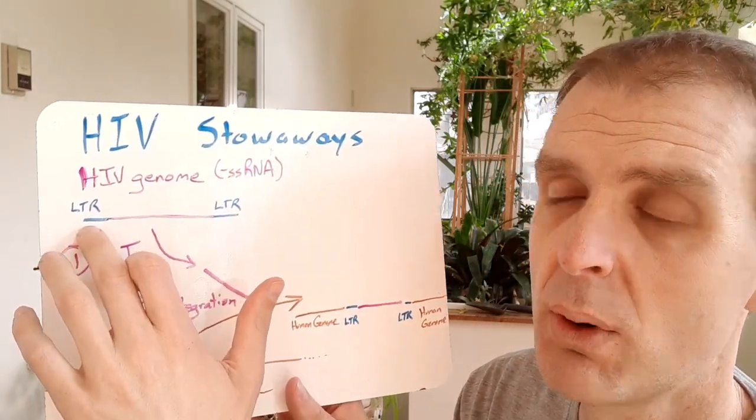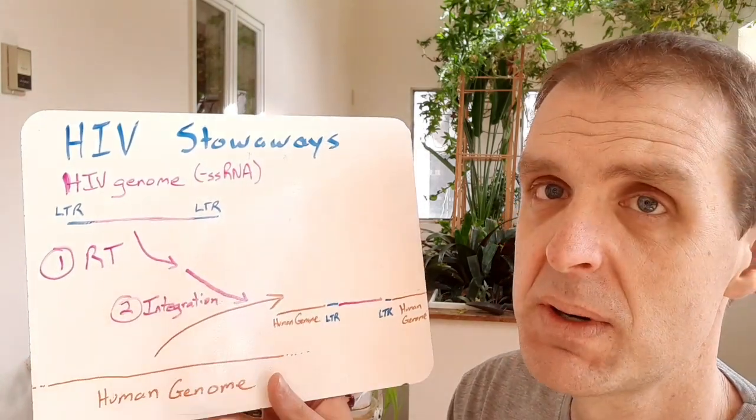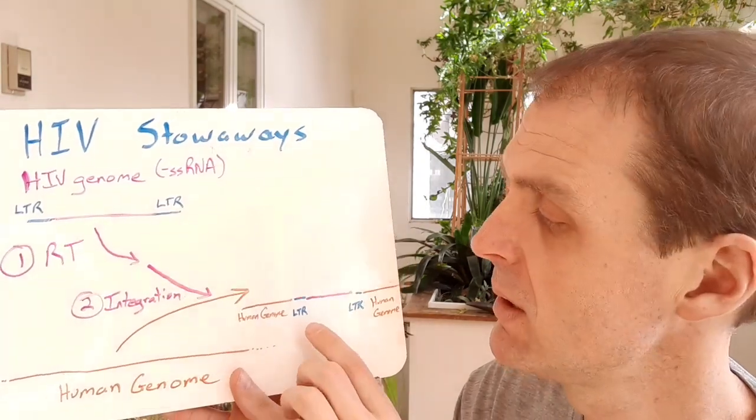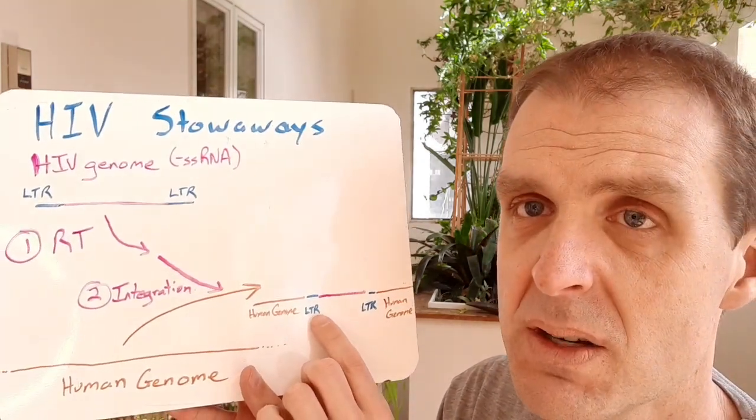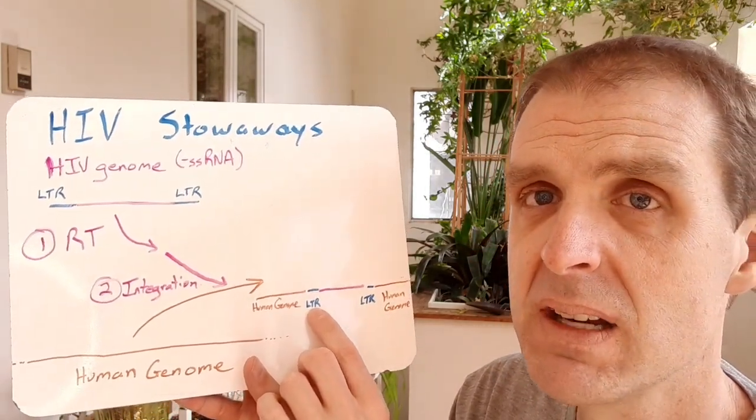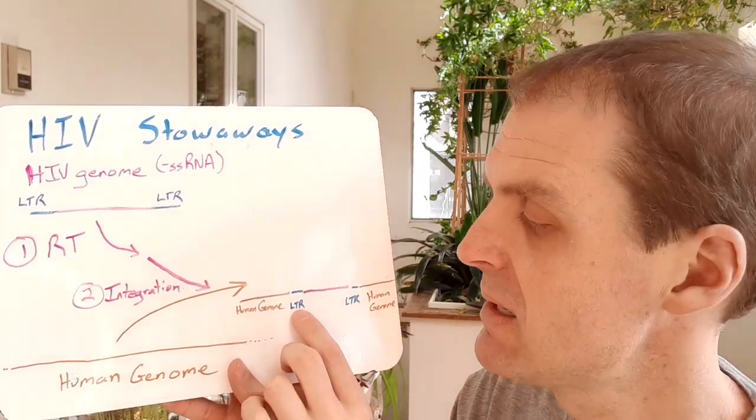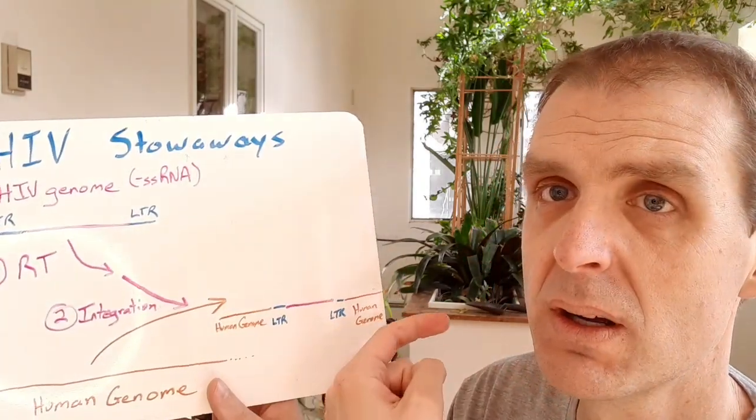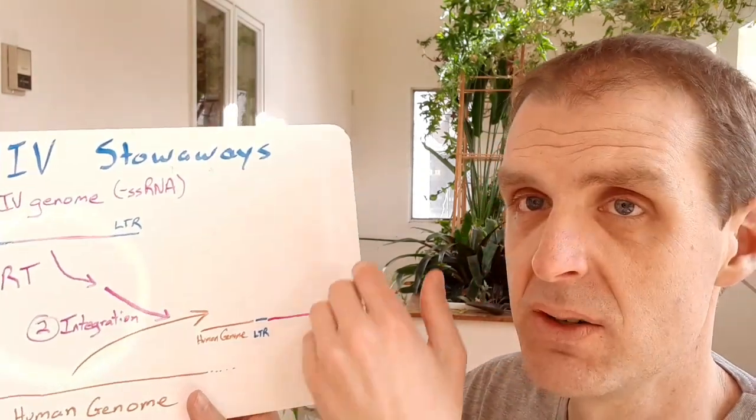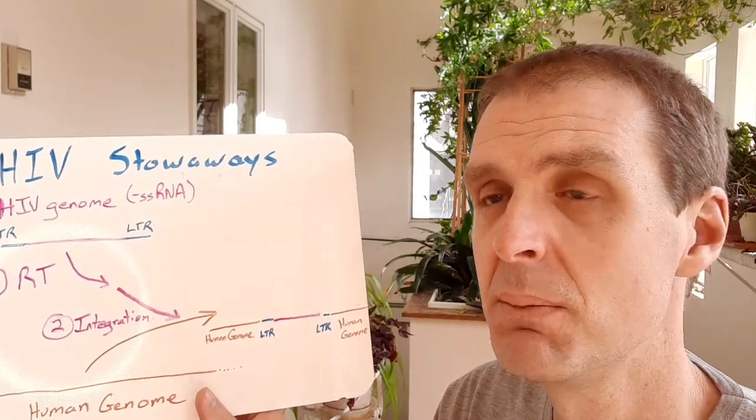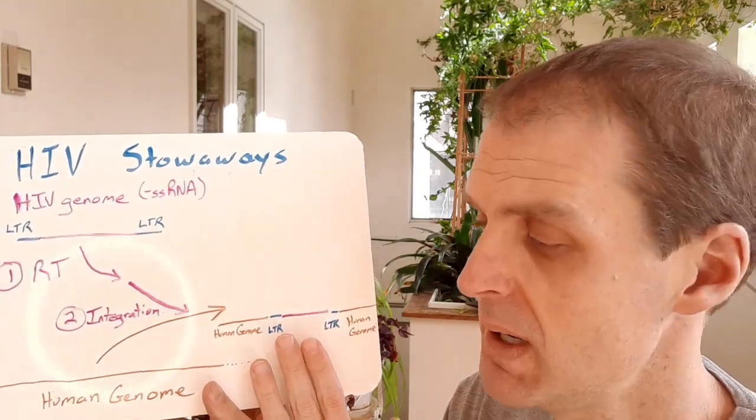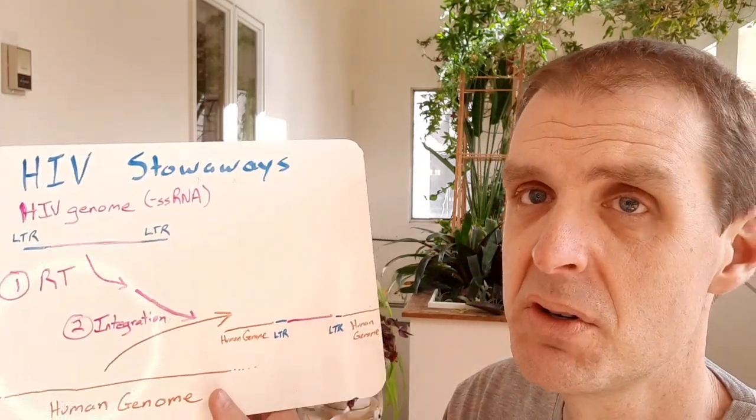Just like the long terminal repeats were important for the reverse transcriptase and other aspects of the virus replication, the long terminal repeats can also act as transcription binding sites. We have transcription factors combined to the long terminal repeats and then they'll work on that genome and make the proteins. Then you can get mRNA and you can make that protein or that virus again.